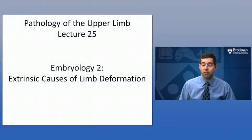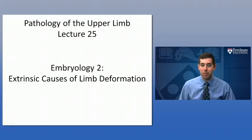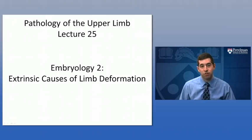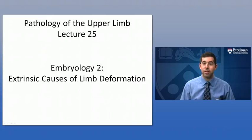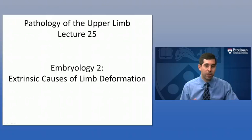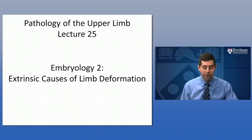Welcome back. We're here for our final lecture of 'Going Out on a Limb,' the anatomy of the upper limb. We're going to be turning our attention now to a different side of embryology: the extrinsic causes of limb deformation. These are things from outside of the developing fetus that are causing problems with development or formation of the upper limb.